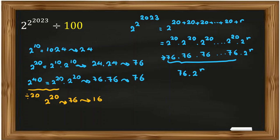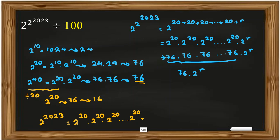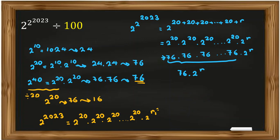So here we want to find 2 to the 2 to the 23, the remainder when divided by 20. We again write 2 to the 20, times 2 to the 20, times 2 to the 20... times 2 to the remainder R1, where R1 is 2 to the 23 mod 20. Now 2 to the 23 mod 20: the last two digits of 2 to the 23 are important. We find R1 is 23 mod 20, which is 3.